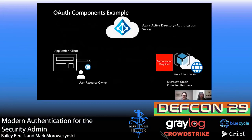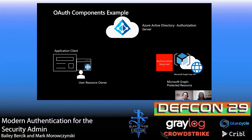Looking at this from an example: the user is the resource owner, using an application (the client) that wants to access Microsoft Graph (the protected resource). To do that, the client needs to talk to Azure Active Directory (the authorization server) to get an access token. If everything works correctly, the client gets an access token, takes it to the protected resource, and is able to access the data it wants—in this case, the user's contacts, calendars, and profile.